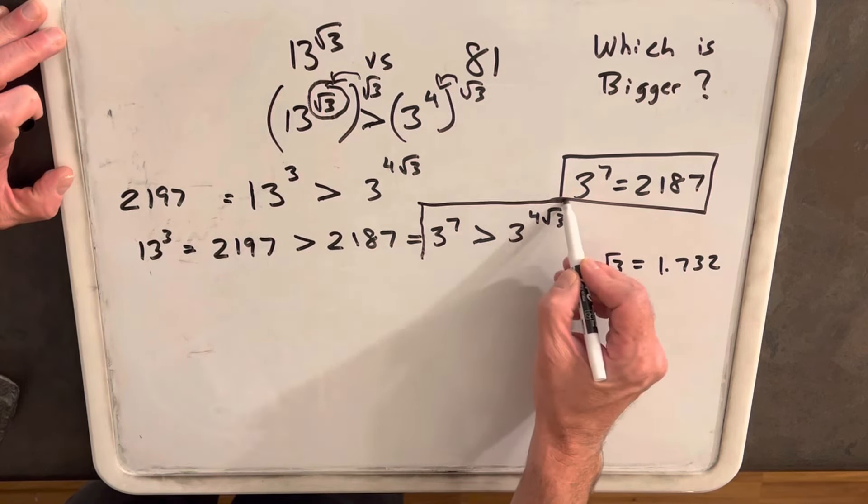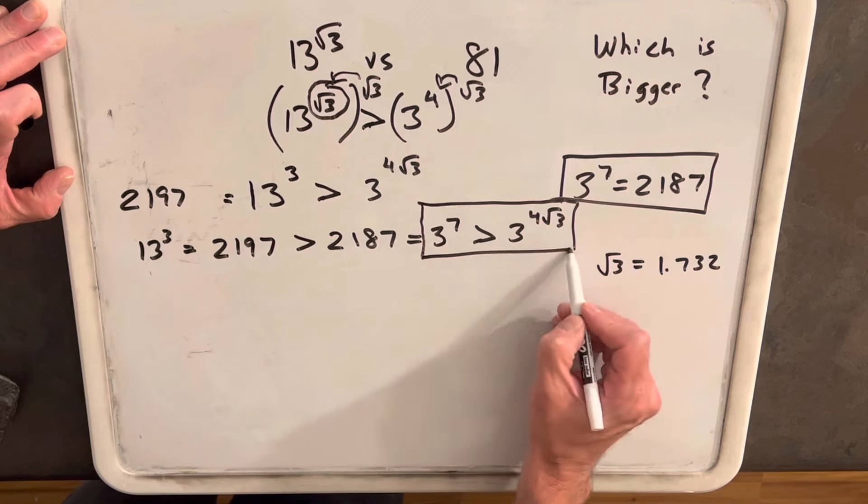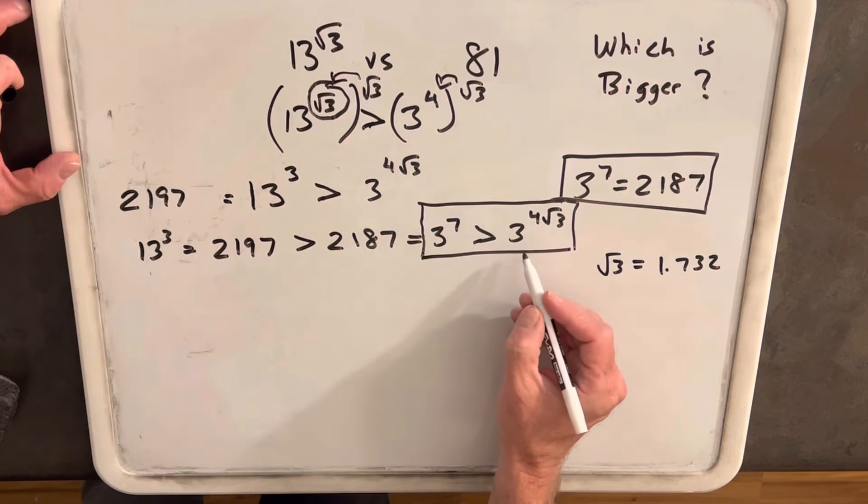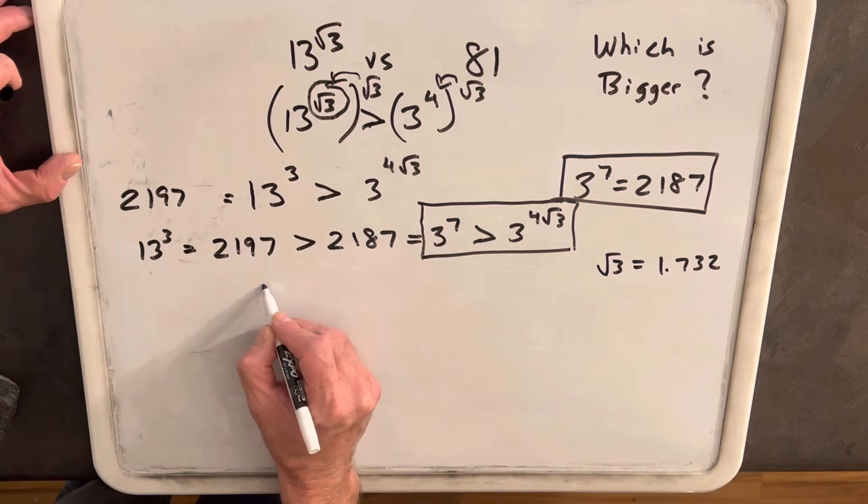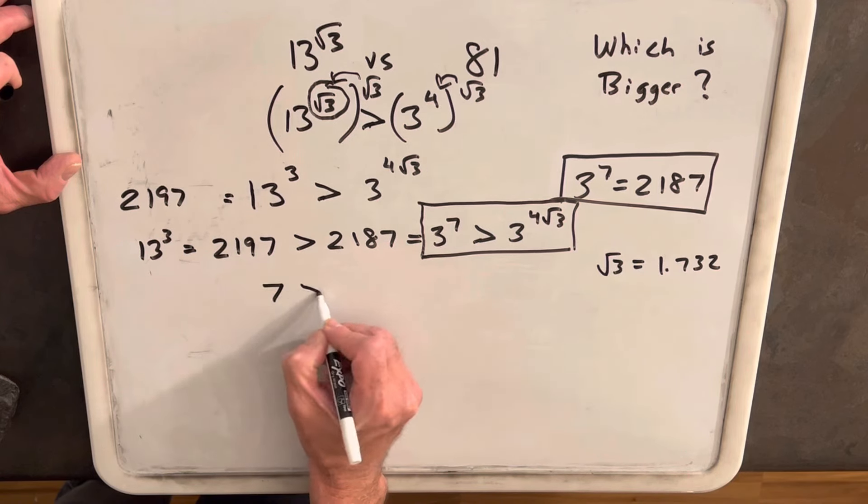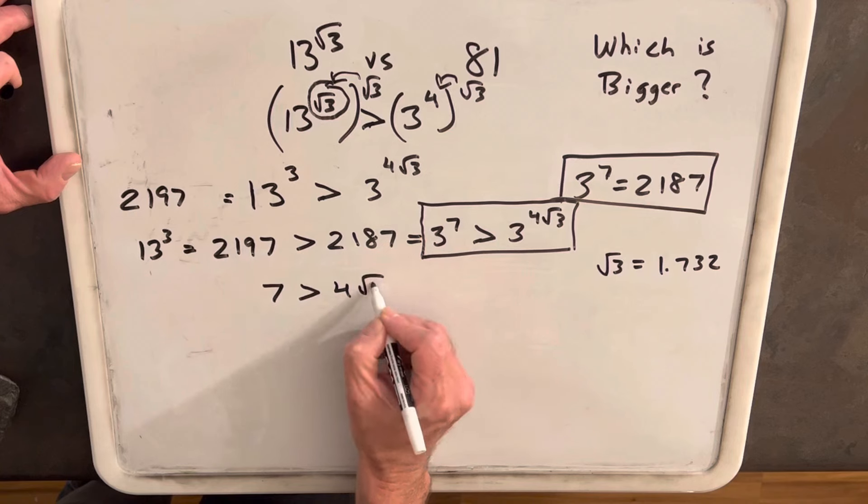We're comparing just 3 to the 7th to 3 to the 4 square roots of 3. But because we have the same base, it's even simpler. We only need to compare 7 to 4 square roots of 3.